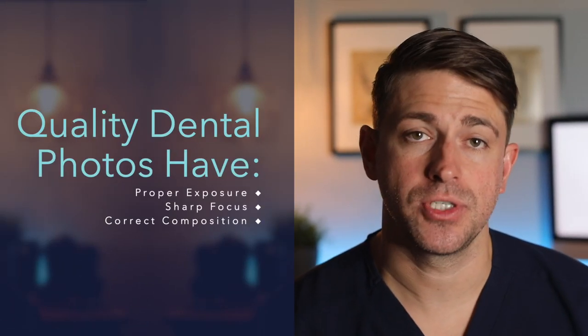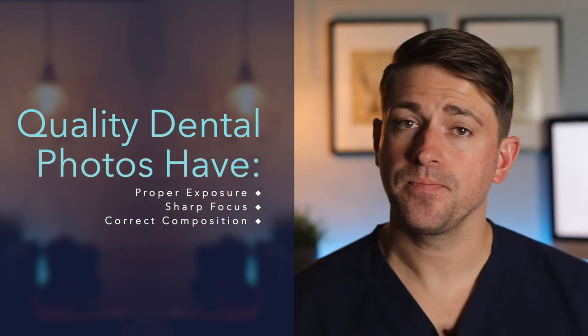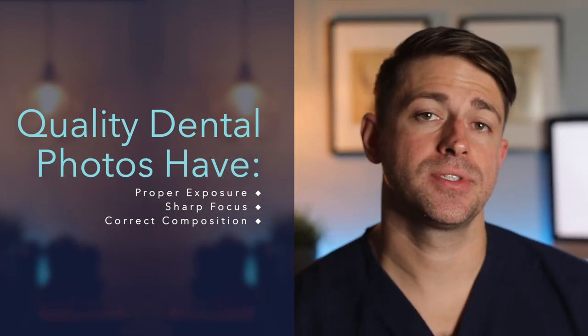In three separate videos, we have looked at three primary factors that contribute to quality images: proper exposure, sharp focus, and correct composition. We discussed how aperture, shutter speed, ISO, and white balance affect the exposure. We talked about how depth of field and camera stabilization affect the focus. In this video, we looked at how correct composition results in a correctly oriented photo and contributes to the image's overall quality.